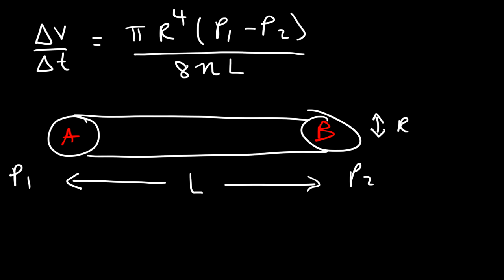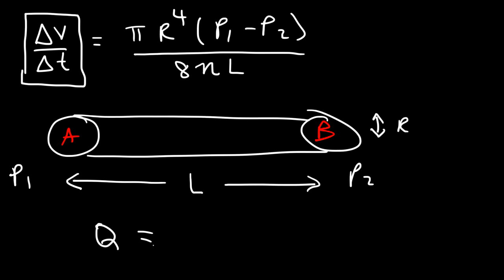Eta is the coefficient of viscosity, which is based on the fluid, so you have to look that up in the table. Now, the volume flow rate, delta V over delta T, in some textbooks is represented by the symbol Q. And keep in mind, the volume flow rate is the area times the flow speed, or the velocity.